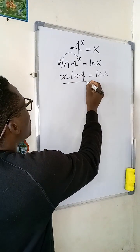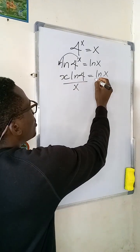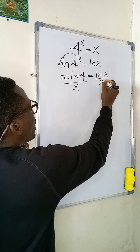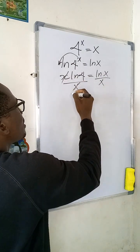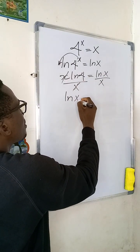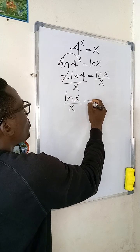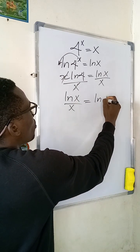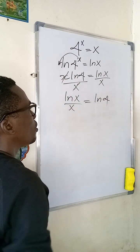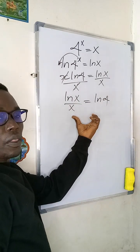Now it is natural to divide both sides by x. When you divide by x, the x on the left clears, and you get ln(x) divided by x equal to ln(4). Now what do we do here?